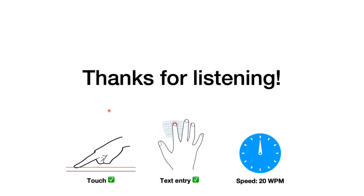Finally, I would like to make some closing remarks. The QWERTY Ring supports two interaction abilities on a physical surface. The first is detecting touch events on a physical surface using only a ring. The second is enabling touch-based text entry on a physical surface, with a typing speed of about 20 words per minute. Thank you for listening. I would like to start our Q&A section.